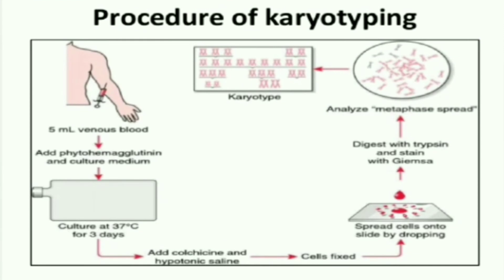The first step in karyotyping involves the collection of 5 ml of venous blood. To it, phytohemagglutinin as well as culture media is added, and it is cultured at 37 degrees Celsius for three days. After this, colchicine and hypotonic saline are added, and the cells are then fixed.